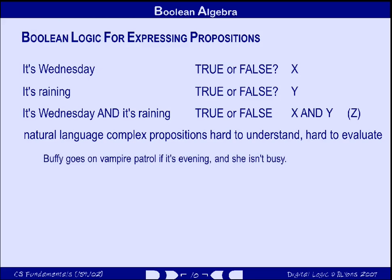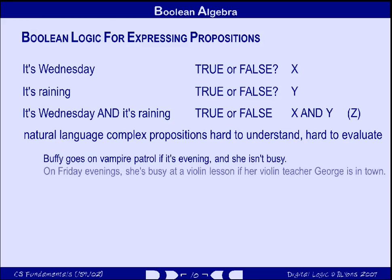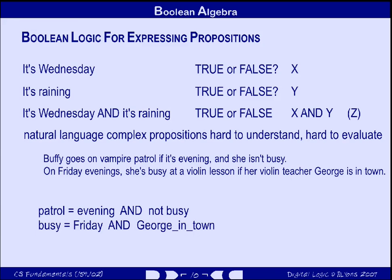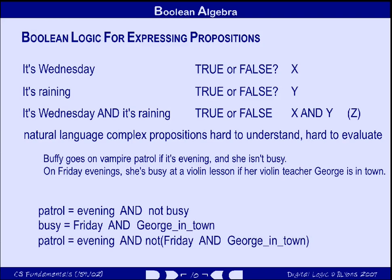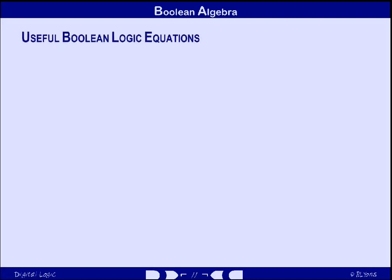For example: Buffy only goes out on vampire patrol in the evening if she isn't busy, and on Friday evenings she has a violin lesson, but only if her teacher George is in town. So we could represent the situation by creating a Boolean expression for a variable called 'patrol' which equals 'evening AND NOT busy.' But 'busy' is itself a function of two variables — 'Friday' and 'George in town' — so the overall expression is 'evening AND NOT (Friday AND George_in_town).' There are various Boolean relationships useful for manipulation and simplification of complex expressions, mostly by eliminating variables and terms, although sometimes the overall goal may be advanced by temporarily increasing the number of terms, because that sets things up for a later reduction step.